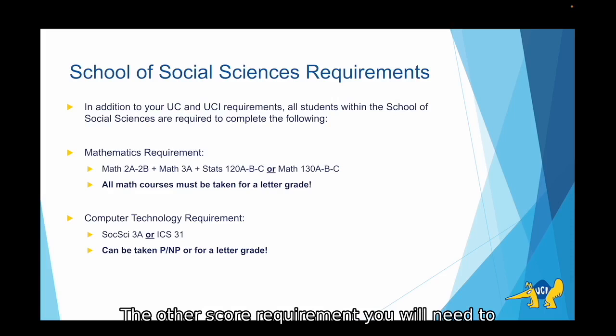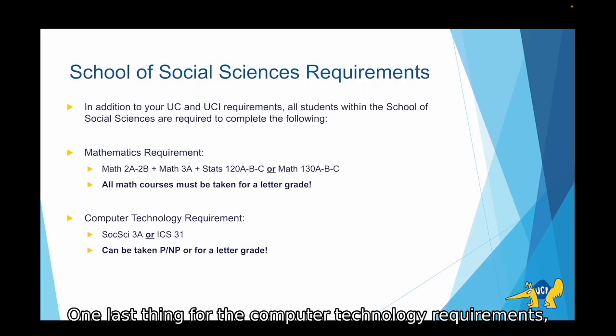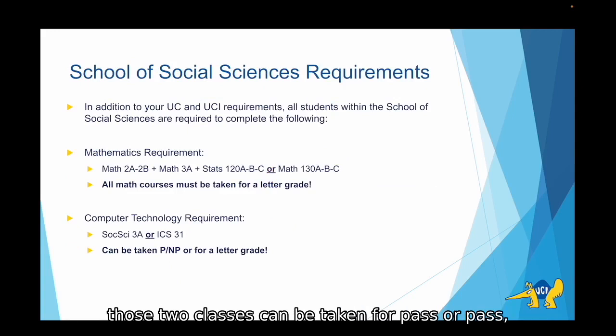The other school requirement you will need to complete is the computer technology requirement. For this requirement, you can take Social Sciences 3a or ICS 31. We do recommend our students usually take SOCI 3a as it will be much easier to get into that class as it is open to all social sciences students and is not restricted while ICS is initially restricted to ICS students. For the computer technology requirement, those two classes can be taken pass-no pass or for a letter grade, but the mathematics requirement must be taken for a letter grade.